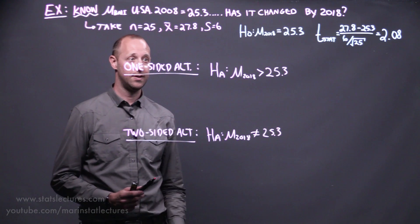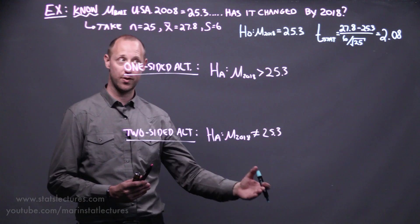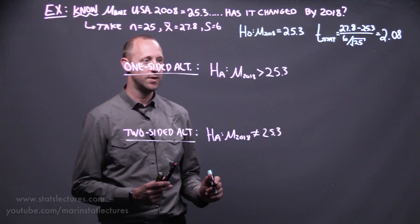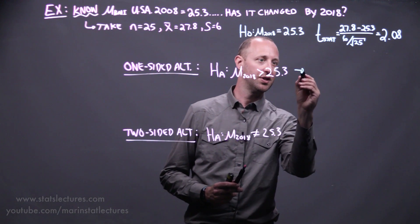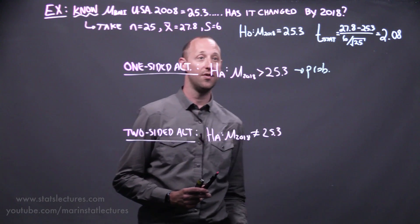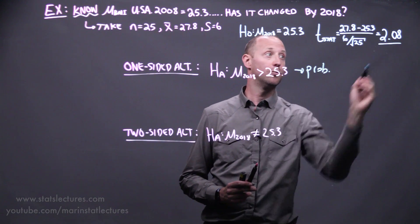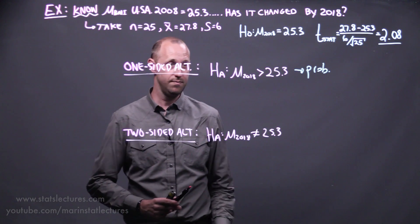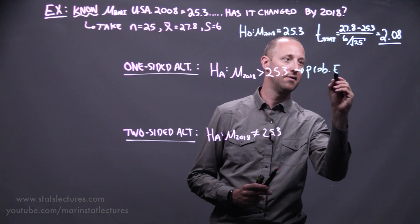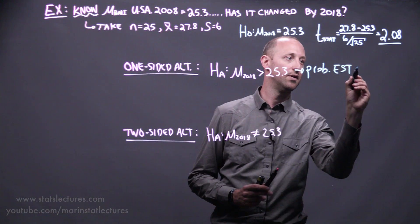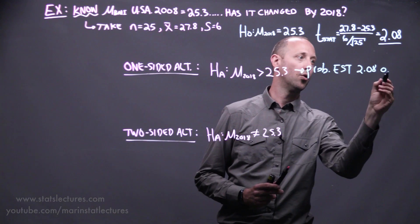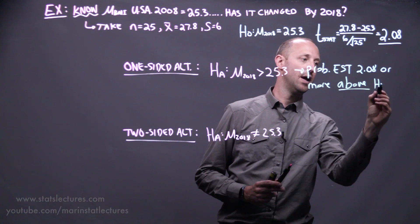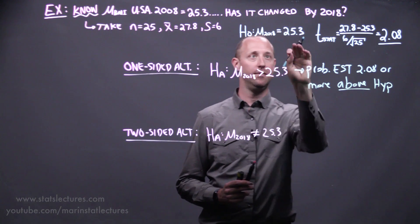In the one-sided test we're looking at a deviation in one direction, or one side of the null hypothesized value. So here we essentially want to ask the question, we saw that the estimate we got was 2.08 standard errors above what we hypothesized it should have been if the null was true. So here we're looking at what's the probability of getting an estimate 2.08 or more above the hypothesized value of 25.3.